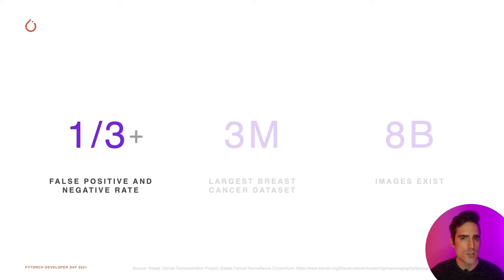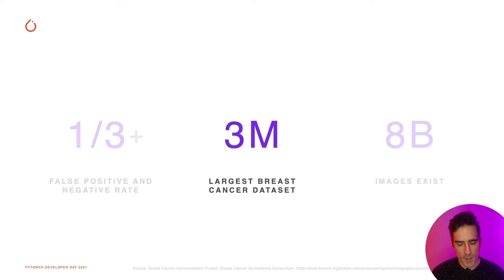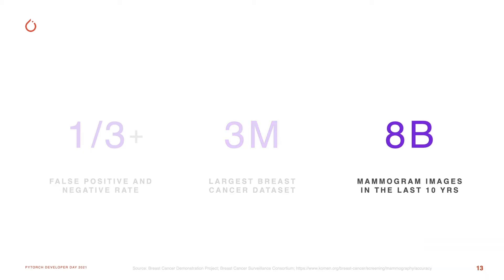Breast cancer classification should be a relatively straightforward image classification problem, which deep learning and machine learning are really good at. But unfortunately, even the best machine learning models put into production are worse than typical human-based screening programs, with a one-in-three false positive and false negative rate being common. This is because the largest dataset we have to work with is only three million images — not a very large dataset — despite the fact that around eight billion images have been produced in the last ten years alone. We have this huge latent resource of images but are only working with tiny slices of it.